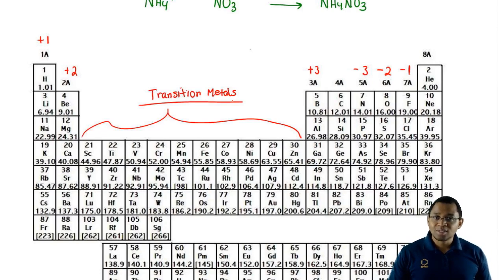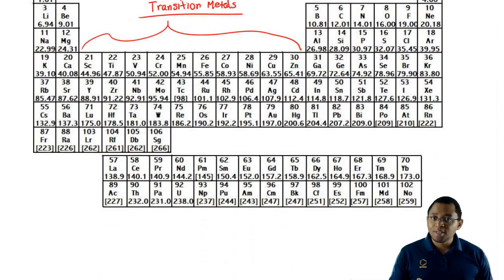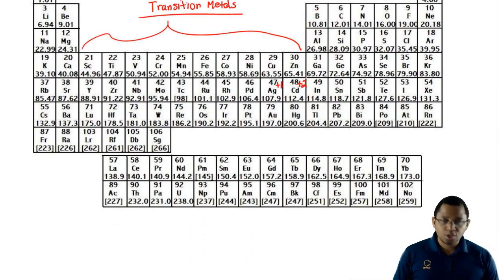Transition metals tend to have more than one charge except for these common three. Silver is always plus 1, cadmium, which is Cd, is plus 2, and zinc is plus 2.